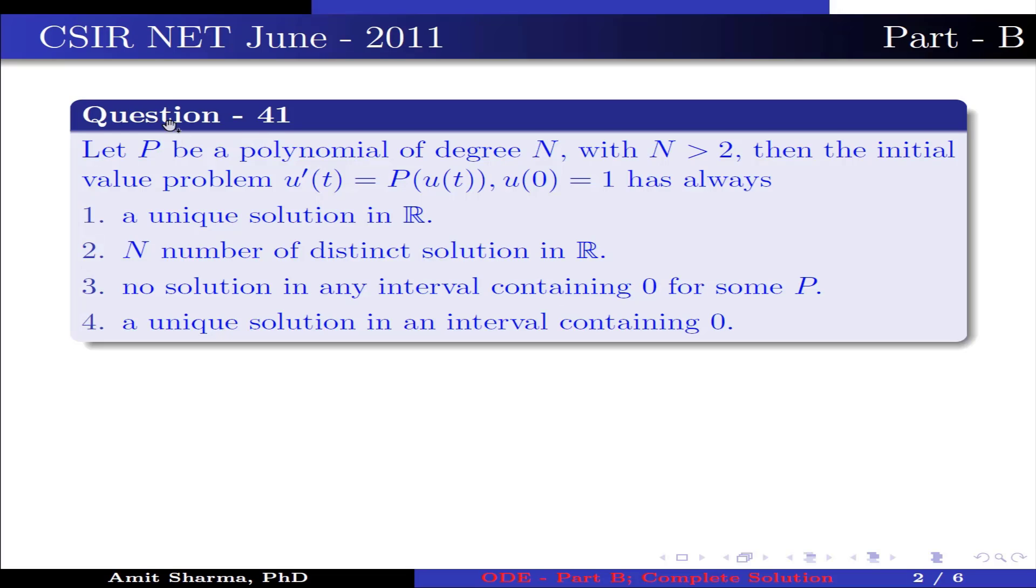Question number 41. Let P be a polynomial of degree n with n greater than 2, then the initial value problem u'(t) equal to P(u(t)), where u(0) is 1, has always: option 1, a unique solution in R; option 2, n number of distinct solution in R; option 3, no solution in any interval containing 0 for some P; option 4, a unique solution in an interval containing 0.